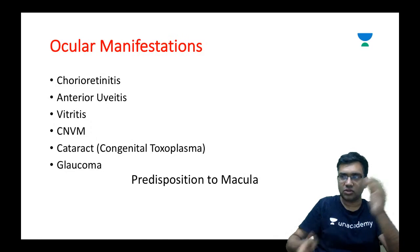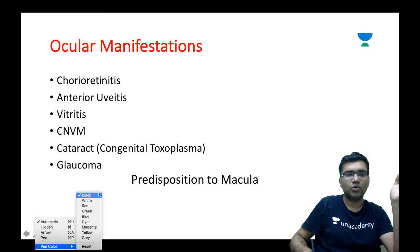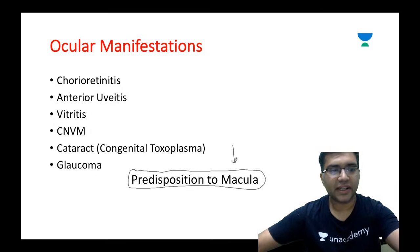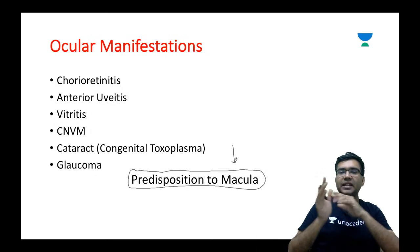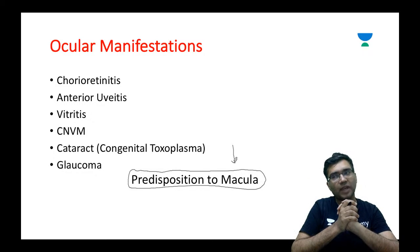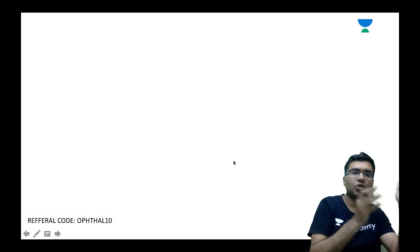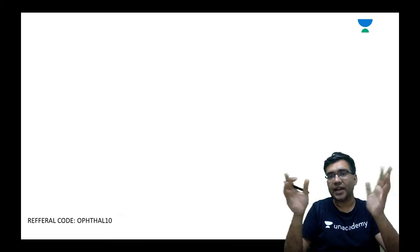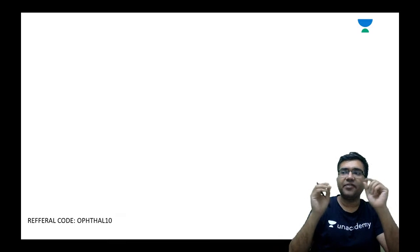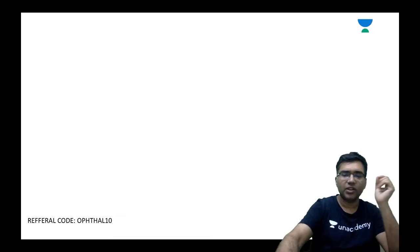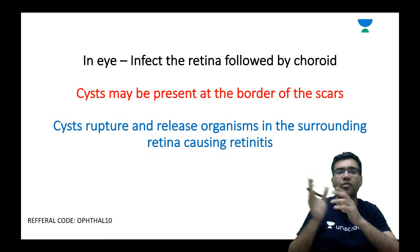Remember, toxoplasma has the most important predisposition to the macula — very important. Now regarding the pathogenesis of toxoplasma infection: whether acquired from the mother or through the GI system, it infects the retina first, and then causes inflammation of the choroid. So first there is inflammation of the retina, followed by the choroid.